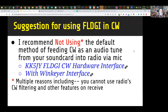If you are using FL Digi to operate CW, I suggest you do not use the default method of feeding CW into the radio as an audio tone through the mic. I suggest instead you use the setup where it actually keys the radio the same as if you're using a straight key. There are hardware interfaces to do that, or if you have a WinKeyer, you can do it also. That means you can use the CW mode on your radio and take advantage of the CW filtering, as opposed to operating on single sideband where it's wide and hard to copy.